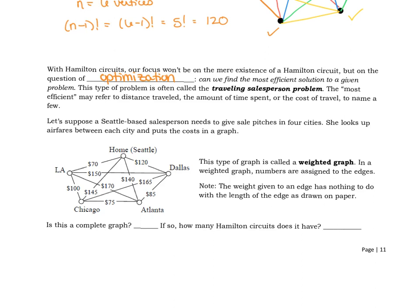Is this a complete graph? Yes indeed. And if so, how many different Hamilton circuits would it have? Well, there are five vertices in this graph, and so there would be (5-1)! or 4! Hamilton circuits, for 24 different circuits.